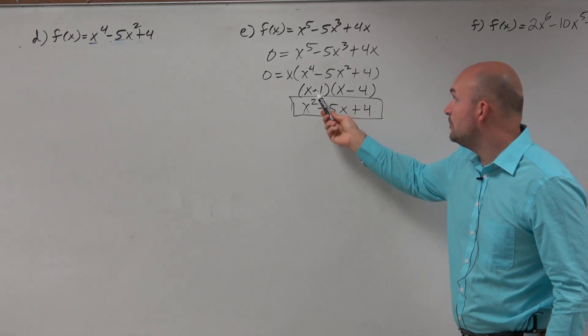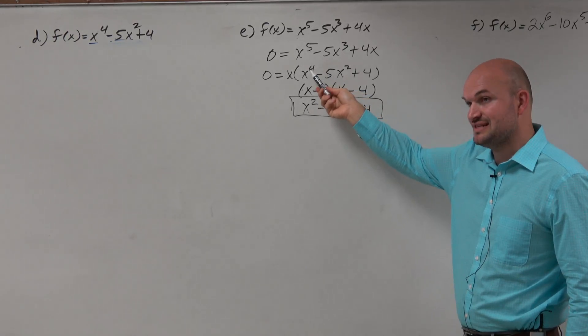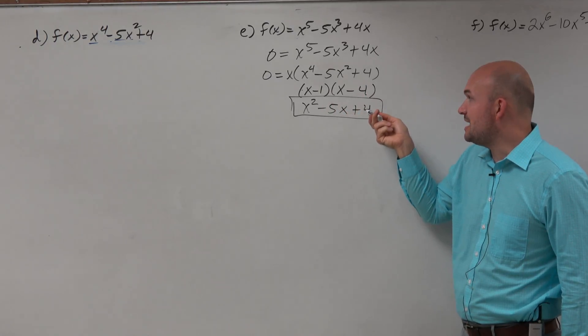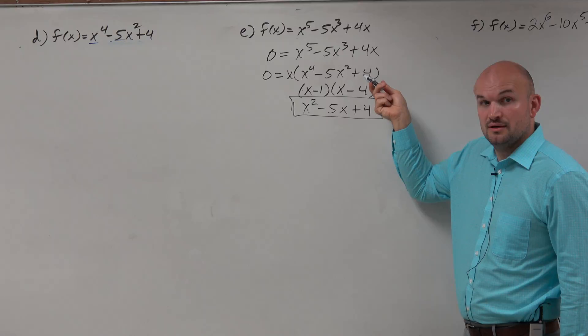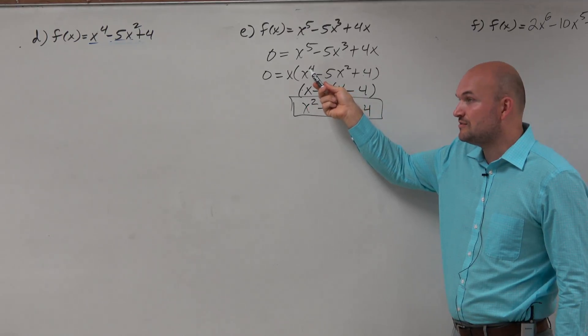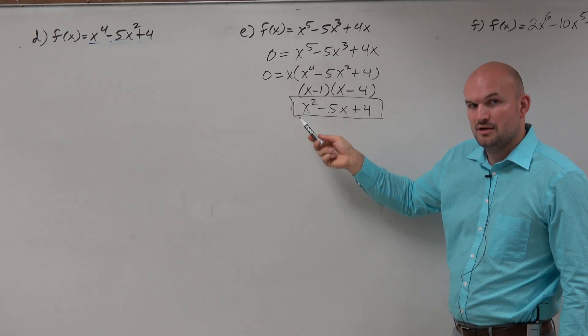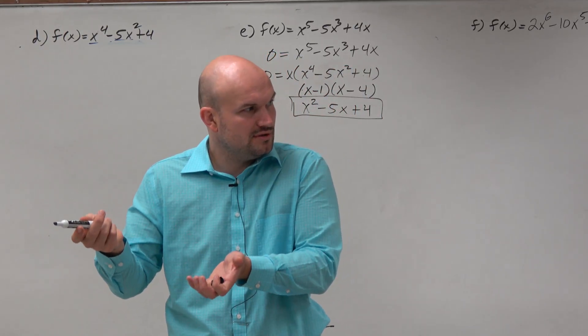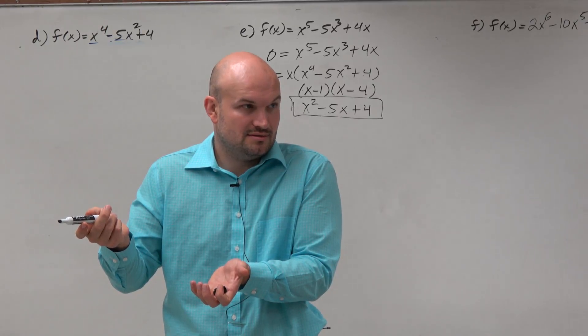The problem is, we need this times this to give us that. So it's important here - negative 1 times negative 4 still needs to give us a positive 4 up here, right? The difference is, my x times my x needs to give me x to the fourth rather than x squared. So what powers should I raise these up to? 3 and 1, right? Because 3 plus 1 is 4. That works, right? Yes, it does work.